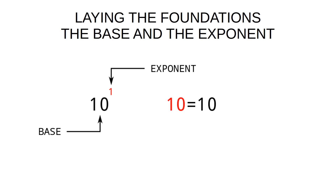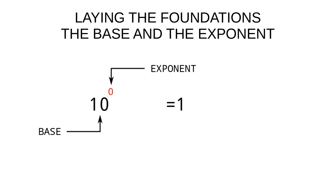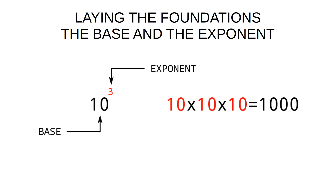Moving forward: 10 raised to the one — any number raised to the one is itself, so 10 to the one is 10. 10 to the two: two tens multiplied by themselves is 100. 10 to the three: three tens multiplied by themselves is a thousand. And of course this is where we get the columns from. In our place system for decimal, we have the ones column on the far right, then the tens column, then the hundreds column, then the thousands column. And 10 to the four would be 10,000 and so on.